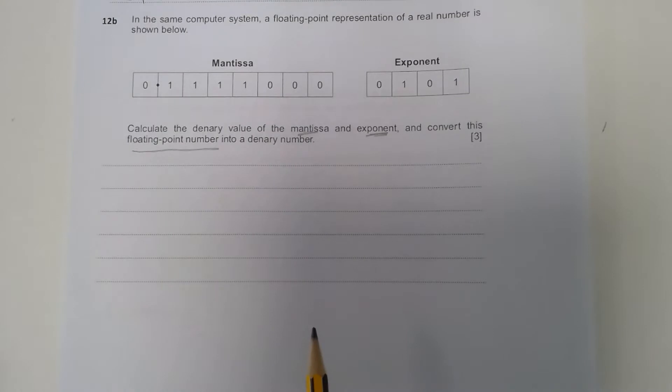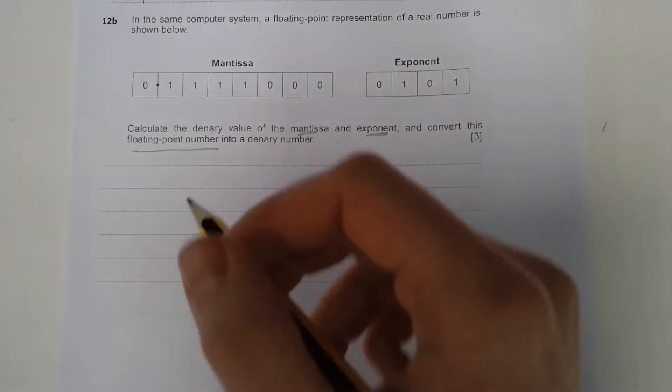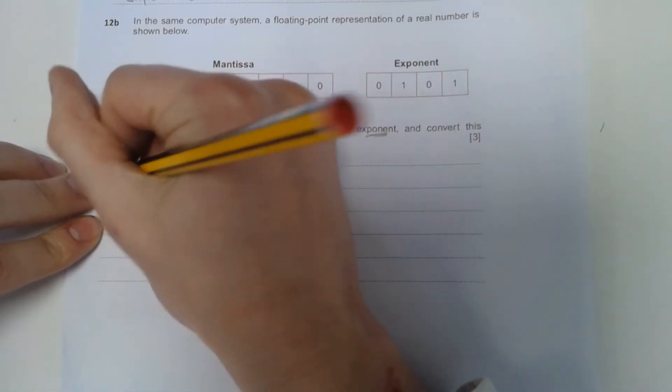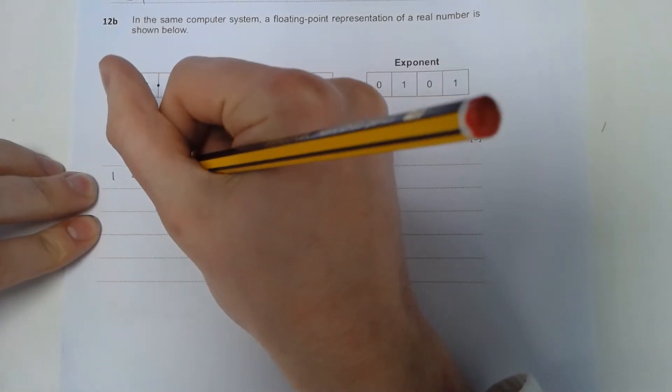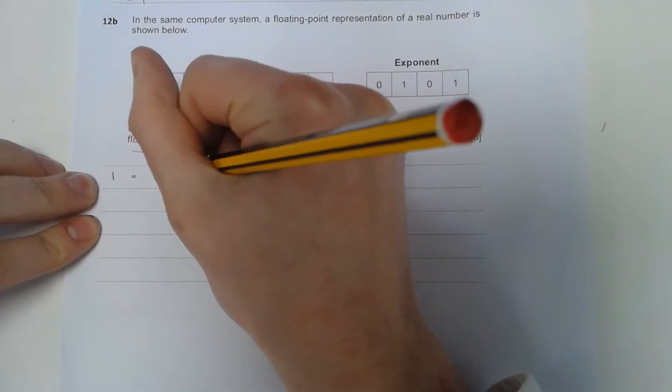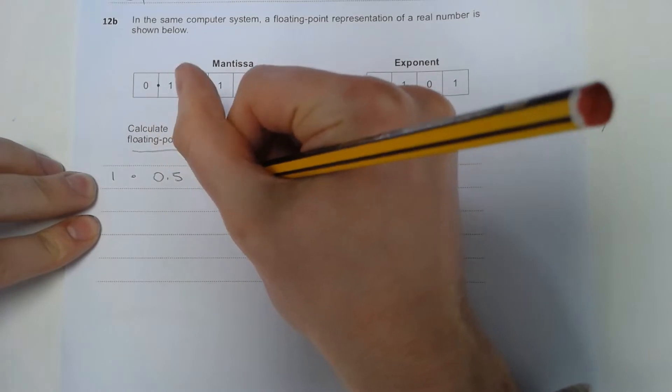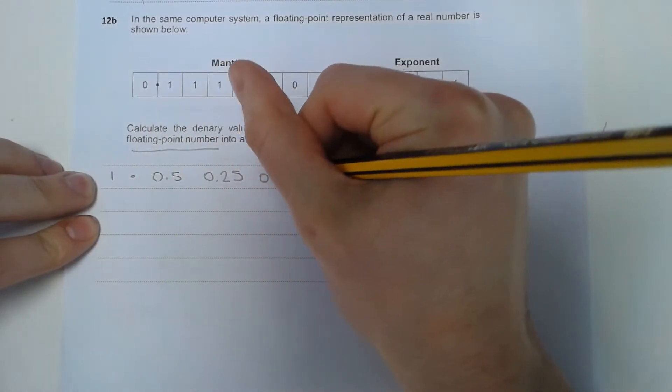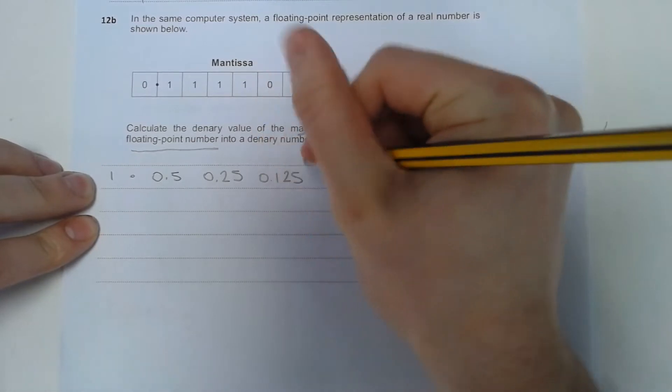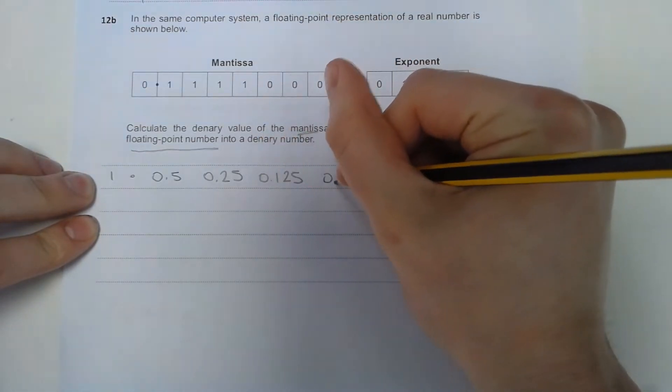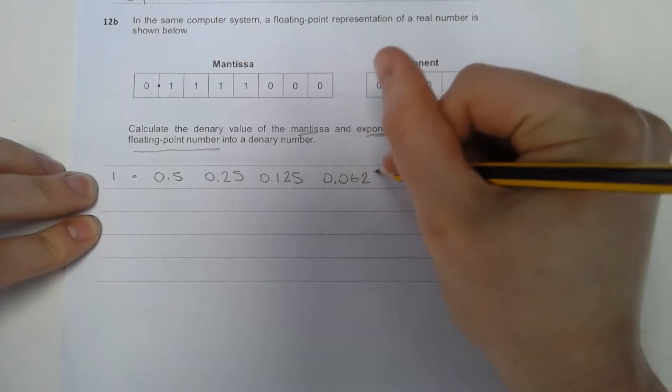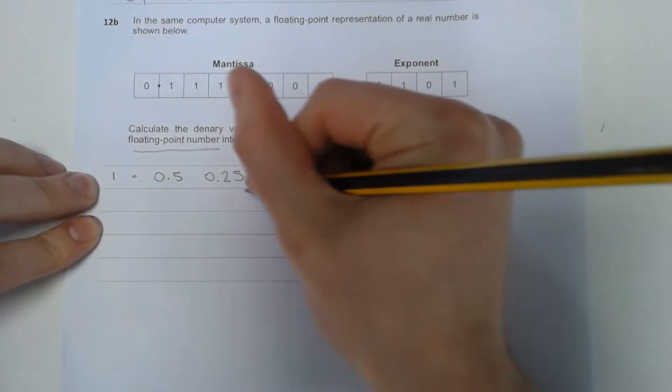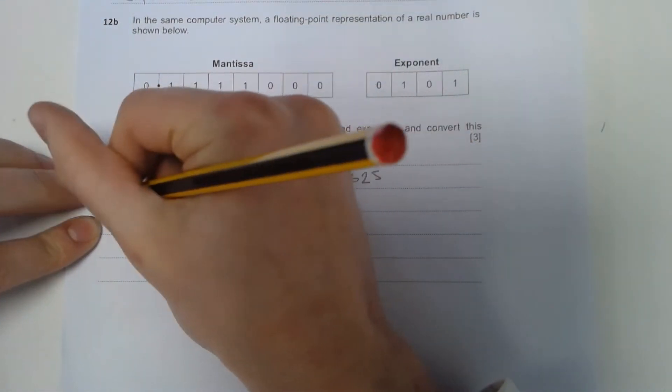Looking first at our mantissa, if we write down our values, I'm just going to create the table. So we'll have 0.5, 0.25, 0.125, and then 0.0625.